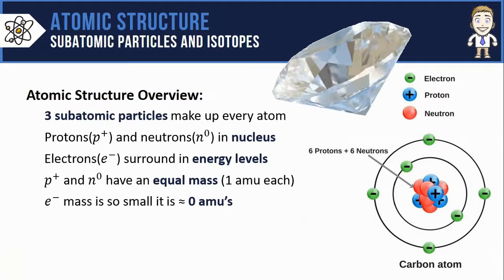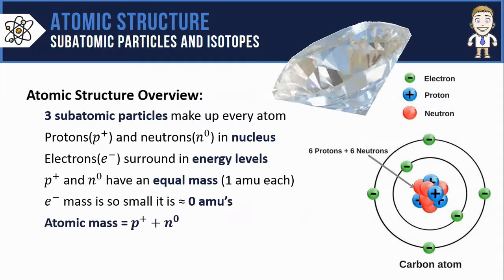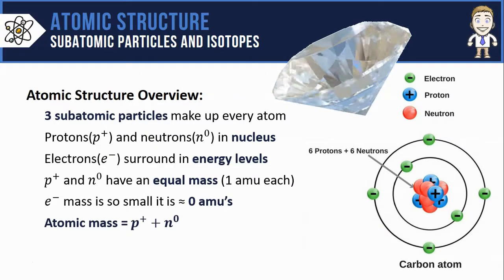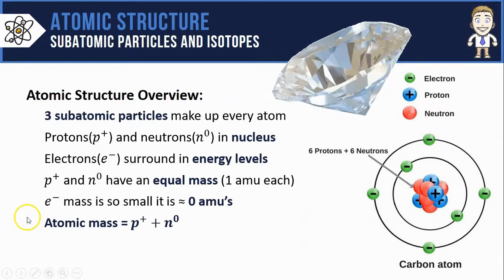Now there are two main ways that we describe atoms like this carbon atom shown. One of them is the atomic mass. Atomic mass is just that - it's the mass of an atom which you find by adding up the only two subatomic particles that have mass: the protons plus the neutrons.